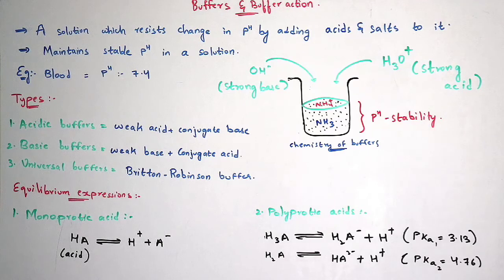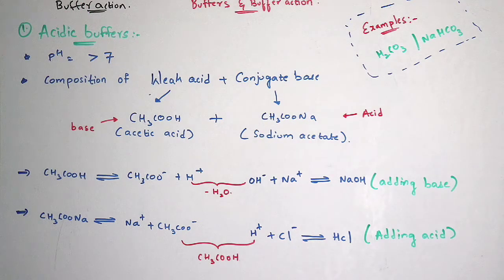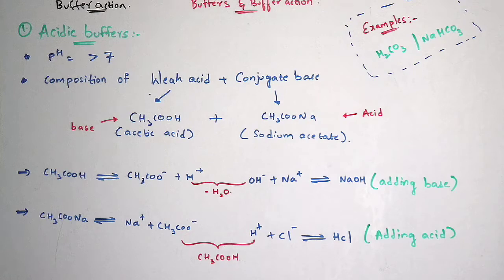Now let us discuss about the mechanism of acid buffers, basic buffers, and universal buffers. Coming to buffer action, let us first discuss acidic buffers. The pH of acidic buffers is less than 7, which is very important to note. Acidic buffers consist of a weak acid and conjugate base. The best example for weak acid is acetic acid, and for conjugate base is CH3COONa — sodium acetate. Remember that for weak acid, base will be added, and for conjugate base, acid will be added.